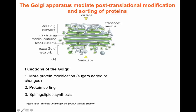Very different biochemical pathways are happening in each of these localizations. Vesicles coming from the ER will join the cis-Golgi network, then travel to the cis cisterna, the medial cisterna, and the trans cisterna. On their way out, they will pass through the trans-Golgi network on their way to the cell surface.